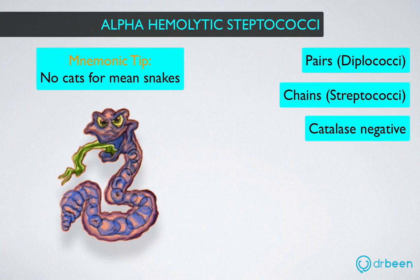There are two types of pathogens in this group: Streptococcus viridans, or S. viridans, and Streptococcus pneumoniae, or S. pneumoniae, also called pneumococcus. Let us now start memorizing these.